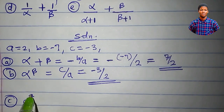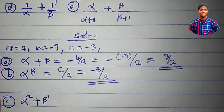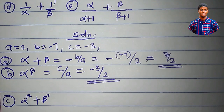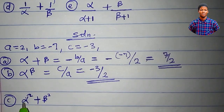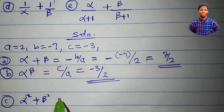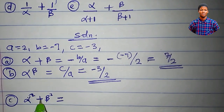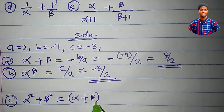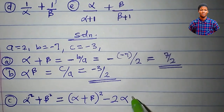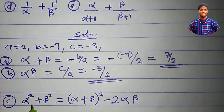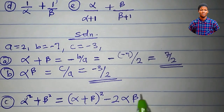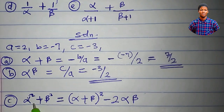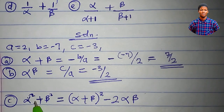The third expression is alpha squared plus beta squared. The individual values of alpha and beta are not known here, so we can't find them directly. But this is a sum of two squares, and the algebraic identity says: alpha squared plus beta squared equals (alpha plus beta) all squared minus 2 alpha beta. If you expand the right side, you get alpha squared plus 2 alpha beta plus beta squared, and the 2 alpha beta terms cancel, leaving alpha squared plus beta squared.